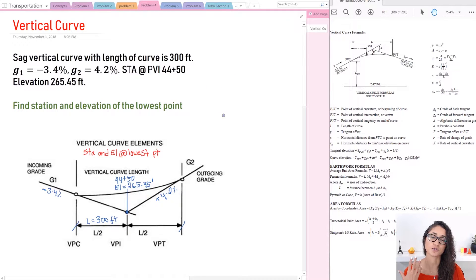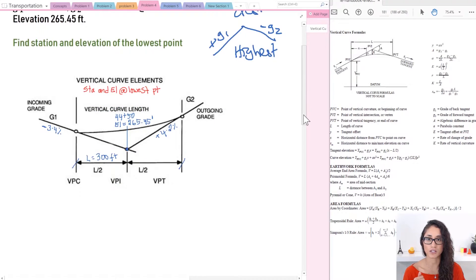If you're dealing with a crest curve, which is something similar to what we did in the previous video, a crest curve looks something like this. You will have plus G1 and then minus G2, and usually we have the highest point. For crest we deal with highest points, and for sag we usually deal with lowest points. Okay, so let's start solving this problem.